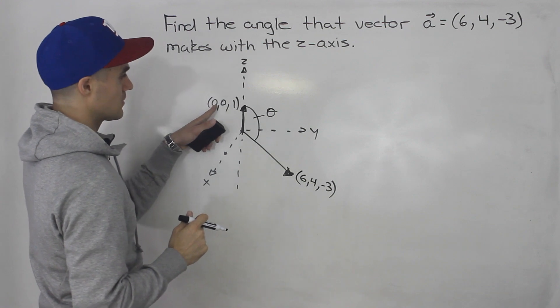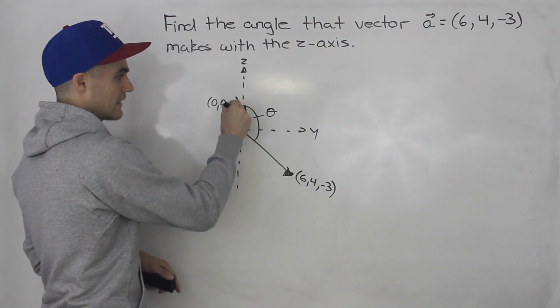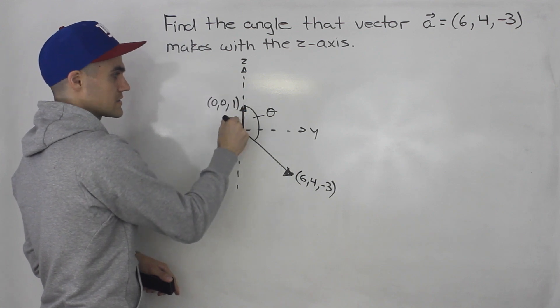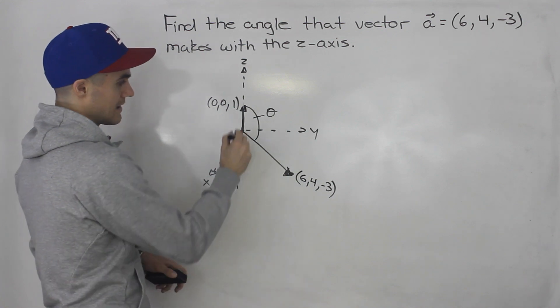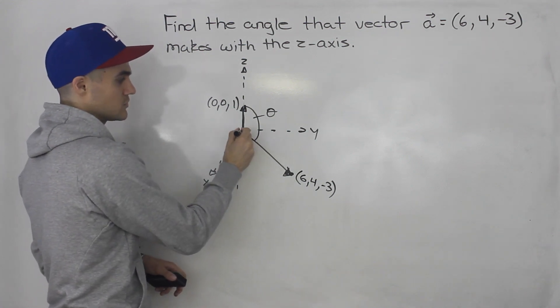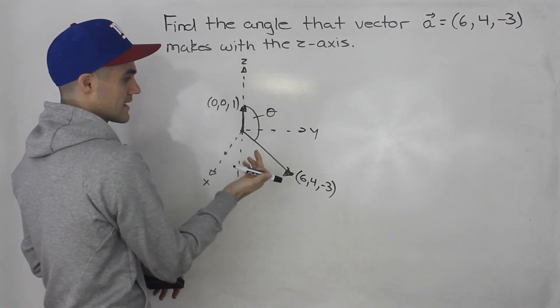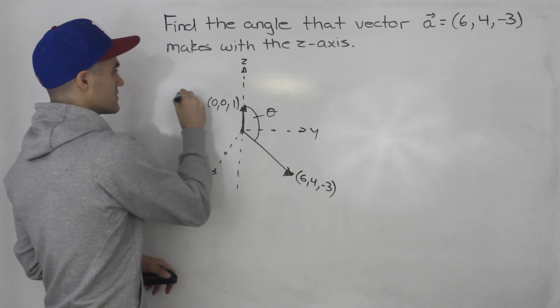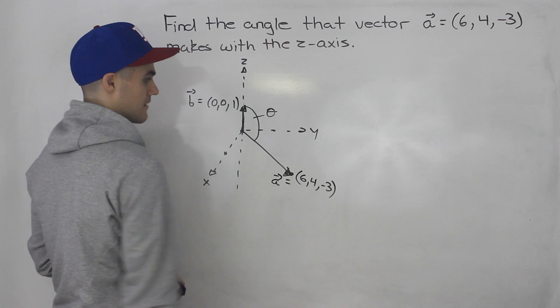Right? x component 0, y component 0, and then you have z component. So this vector with these components is along the z-axis. So if we can find the angle between this vector and this vector, that's the same thing as finding the angle between this vector and the z-axis because this vector is along the z-axis. So let's call this vector b here. And then this is vector a.